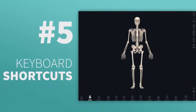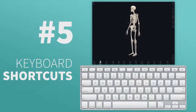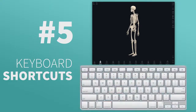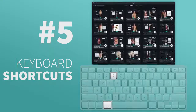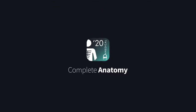Tip 5: This one's for our friends on Mac. Access a range of keyboard shortcuts for quick, seamless interaction with the model. Instantly open search by pressing Command-F in the model view, or quickly access your content with Command-4. Check out all keyboard shortcuts in our description.